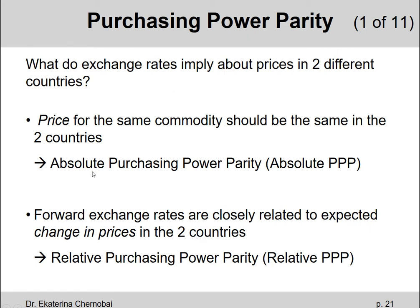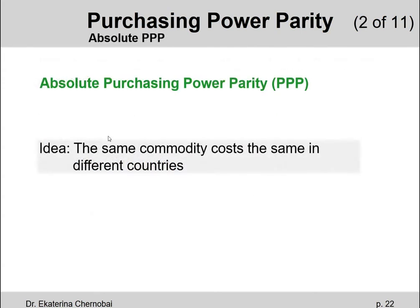Let's start with absolute purchasing power parity and then look at relative purchasing power parity. What the two have in common — and there will be a formula for each — is that they connect the exchange rate with prices in different countries. The idea behind absolute PPP is that the same commodity costs the same in different countries.